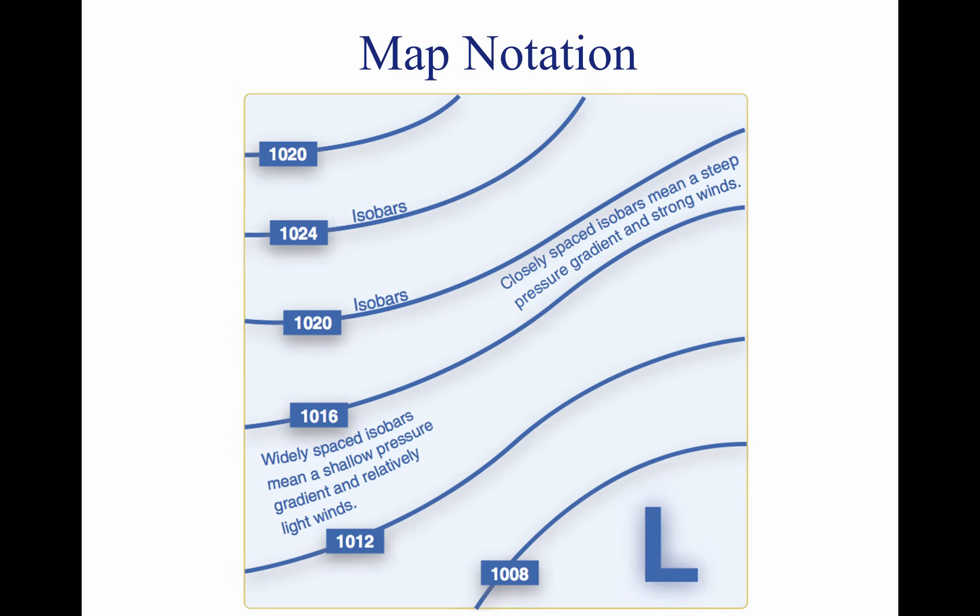The pressure for each station is recorded on the weather chart and is shown in millibars. Isobars are lines drawn on the chart to depict areas of equal pressure. These lines result in a pattern that reveals the pressure gradient, or change in pressure over distance, as shown above.